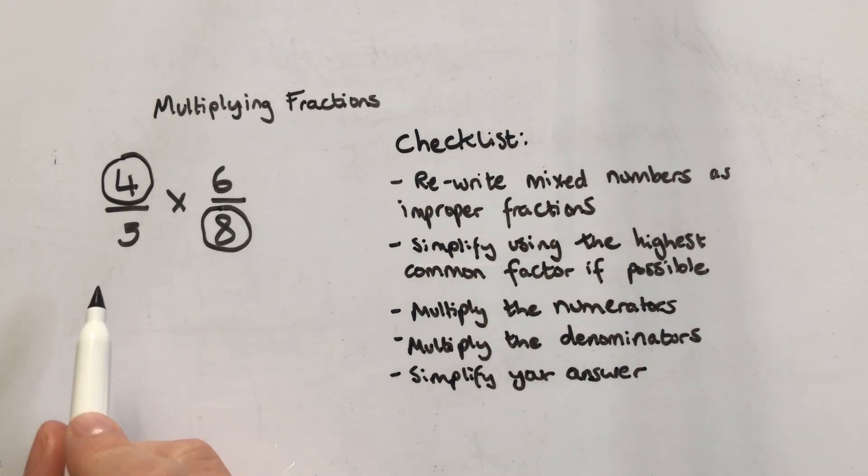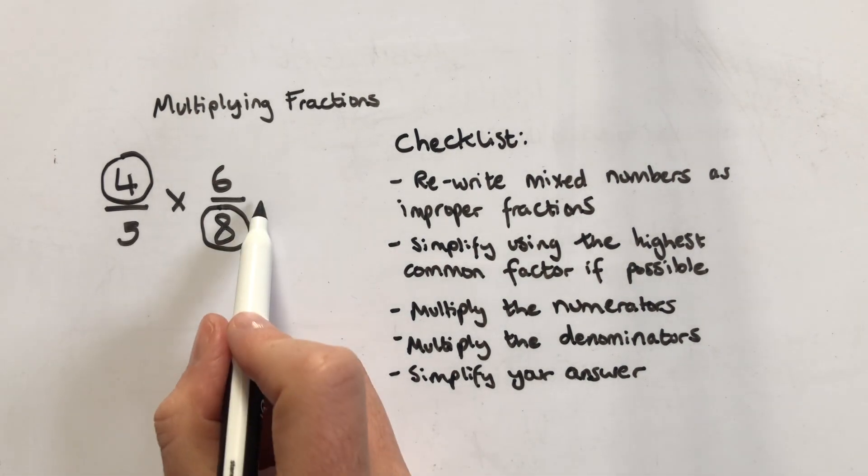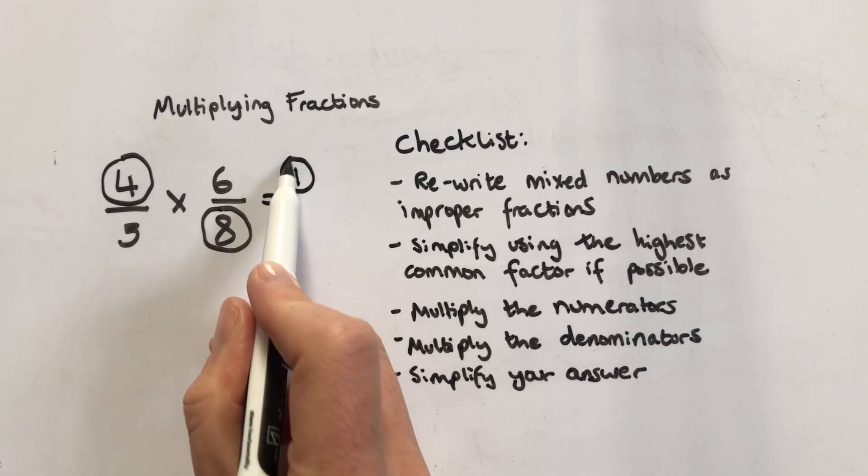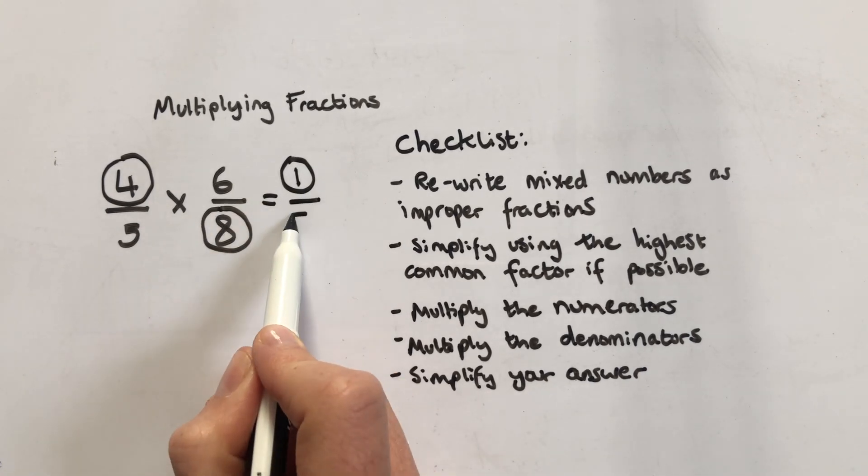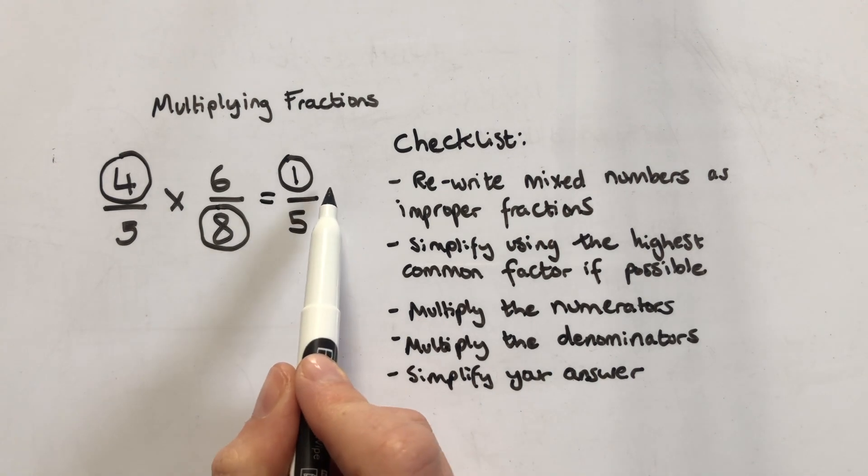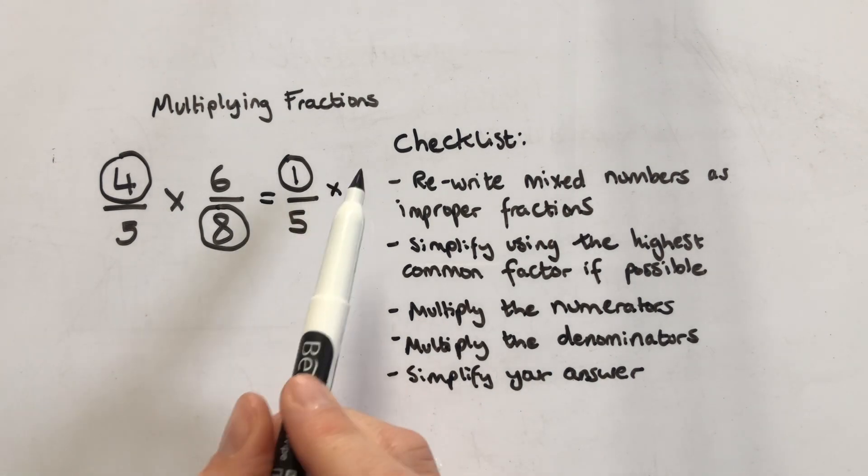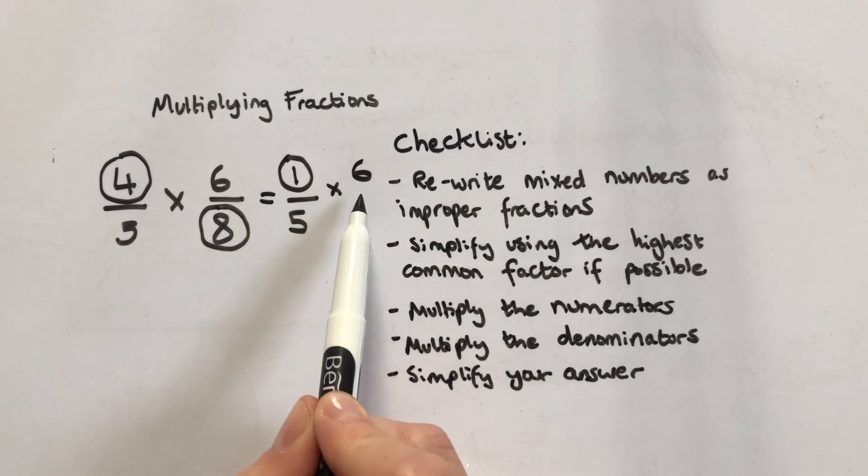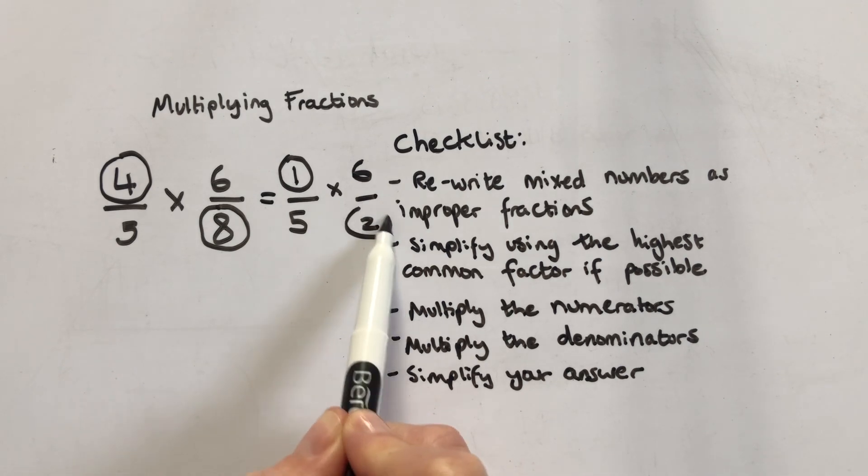So four divided by four is one, and I leave that denominator as it was. Eight divided by four is two. So I've simplified this before I've started to multiply.